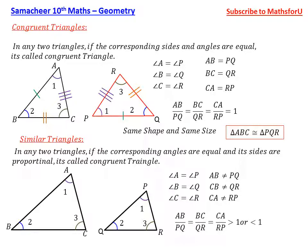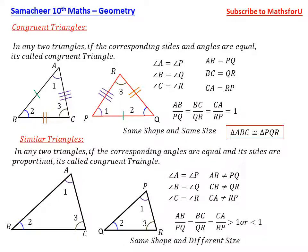This constant K can be greater than 1, less than 1, or equal to 1. If K equals 1, the triangles are both similar and congruent — same shape and same size. But for similar triangles, the size is different. We denote this as: triangle ABC is similar to triangle PQR.